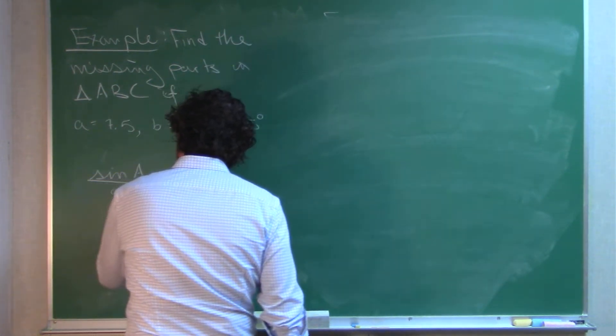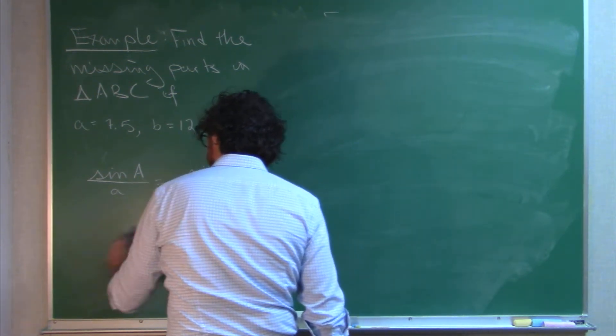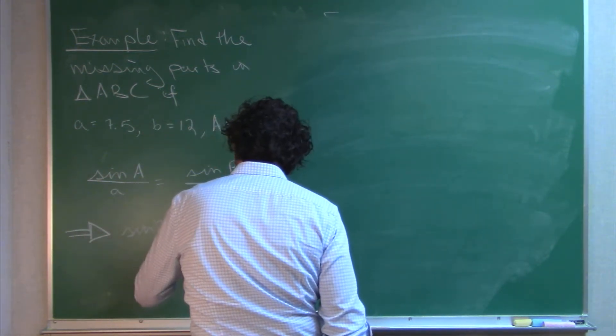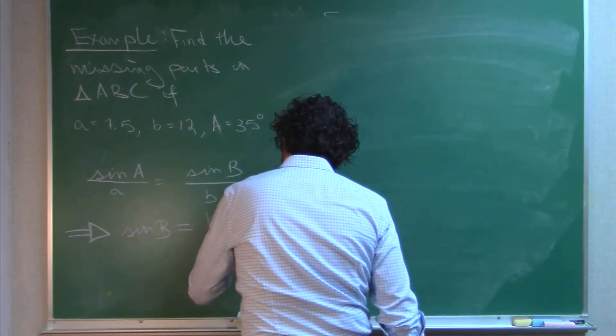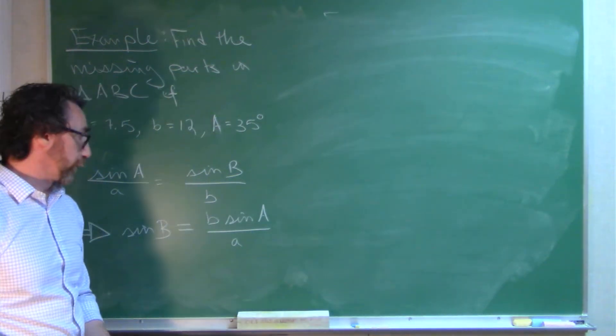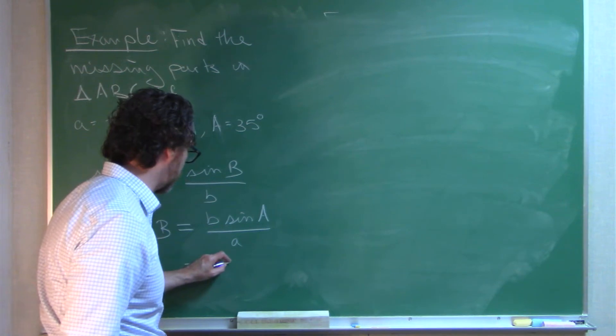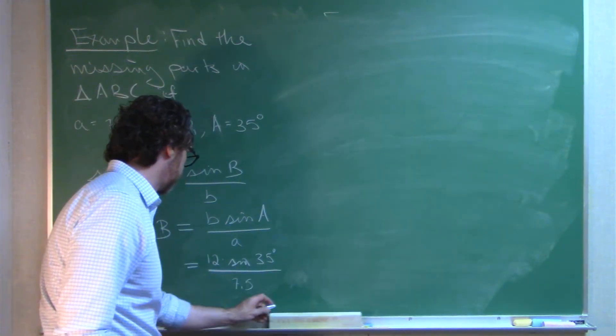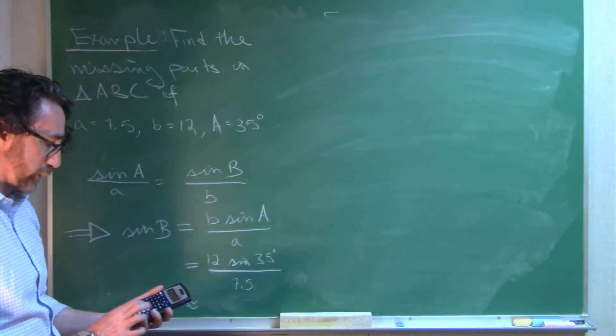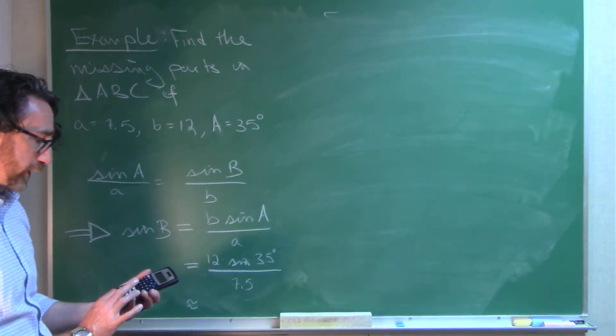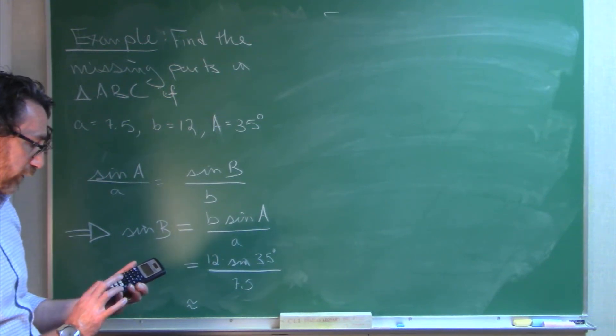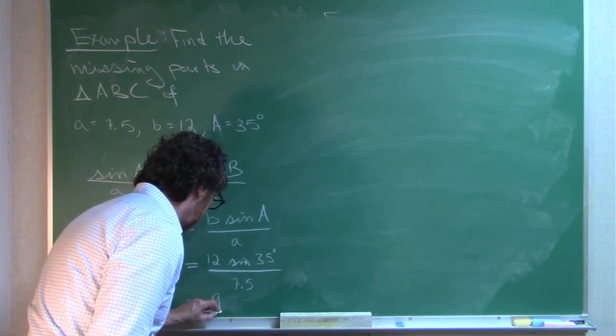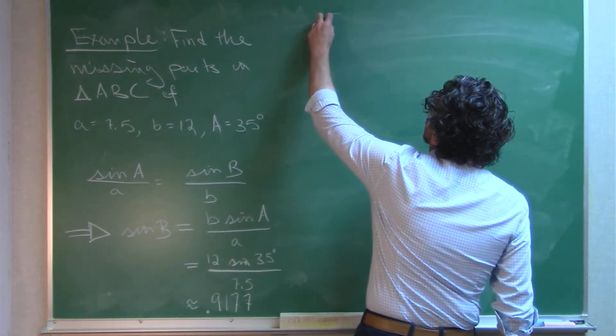Sine A over A equals sine B over B. As before, we will solve for sine B to help us make some progress by finding an unknown angle. So now let me do some number crunching with these values. So 12 times sine 35 degrees over 7.5. Okay, so 12 times sine 35, divide by 7.5. So I'm getting approximately 0.9177.